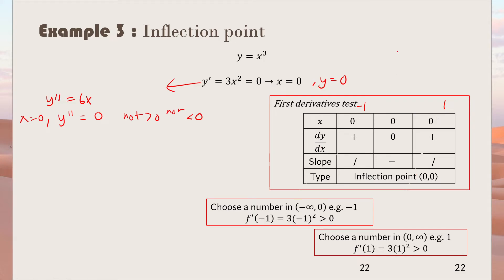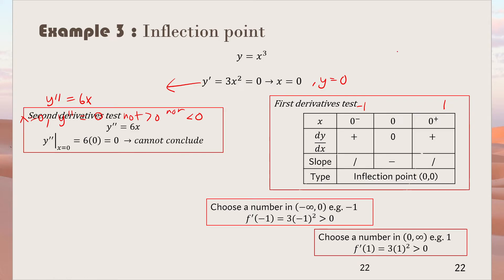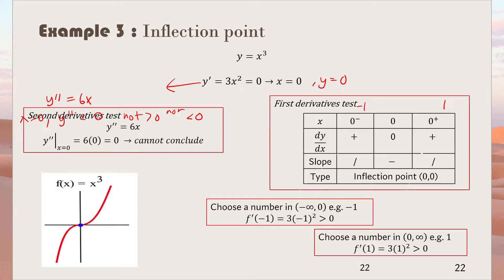Using the first derivative test on y = x³ with x = 0: choose x = 1 (greater than 0) and x = -1 (less than 0). Substituting into y' = 3x², both values give a positive result. Since the slope is positive on both sides, x = 0 is an inflection point. This is a special case — most of the time, we don't get inflection points this way.